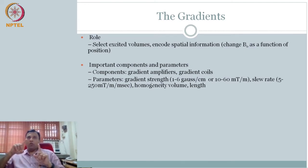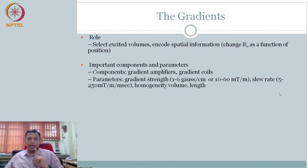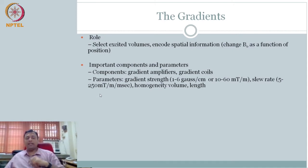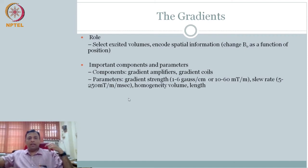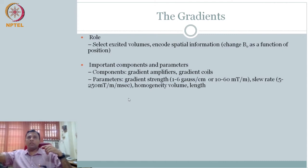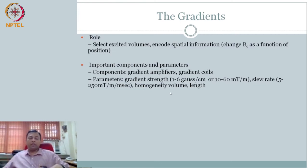We are talking about how fast the gradient changes — you turn it on, how fast does it change? Somewhere time should come in. That is called the slew rate: 5 to 250 millitesla per meter per millisecond. How fast this gradient changes is one parameter. Apart from that, the length over which it changes is also important because that determines in absolute terms how much field strength is at the endpoints, and the homogeneous volume over which you can consider that field strength to be homogeneous.